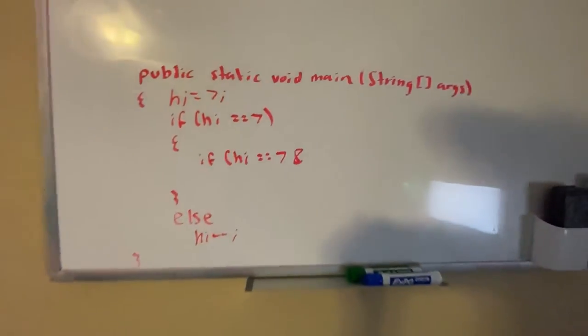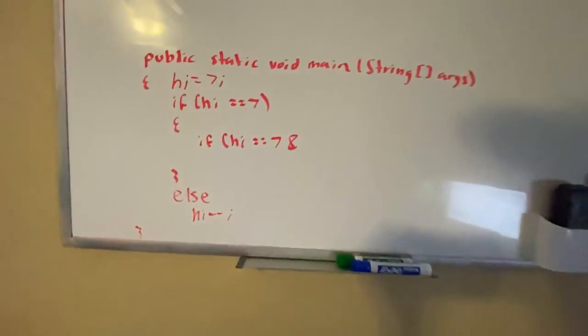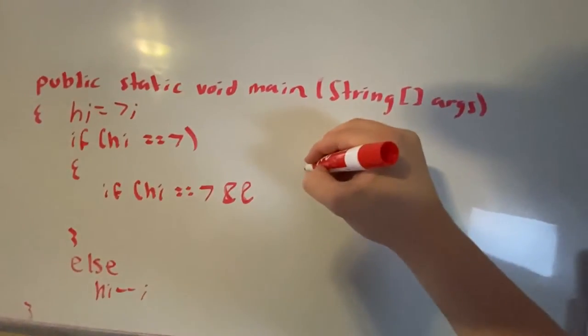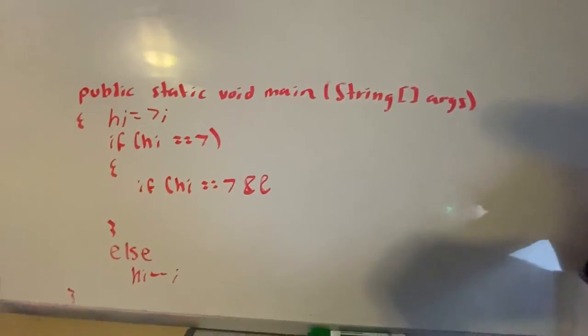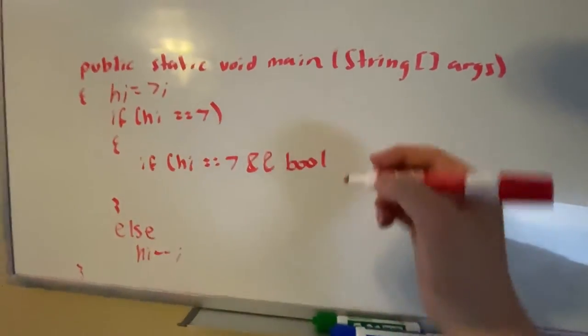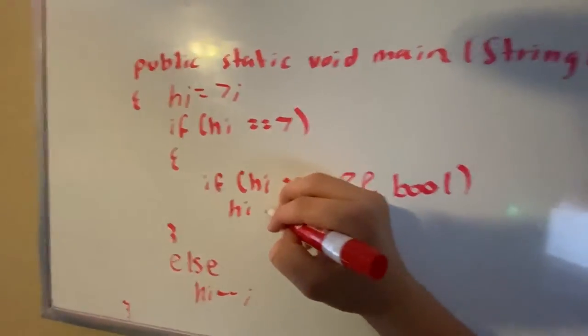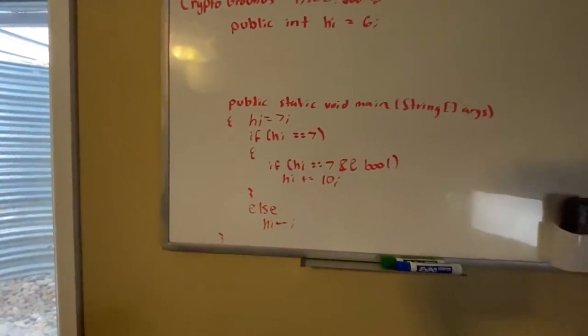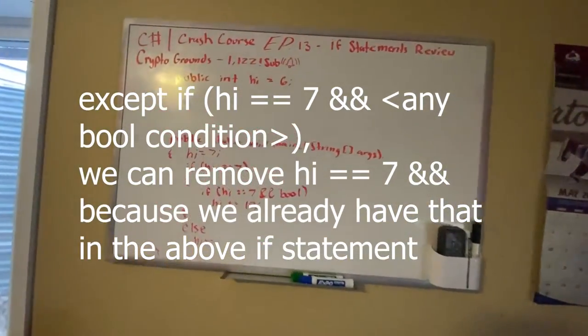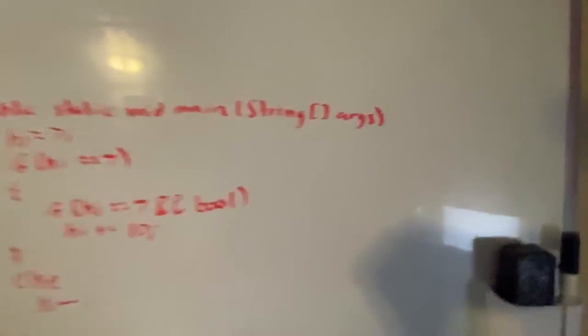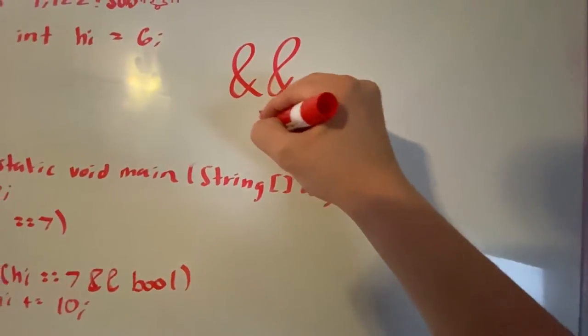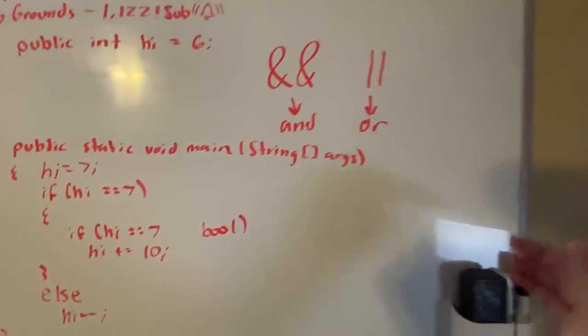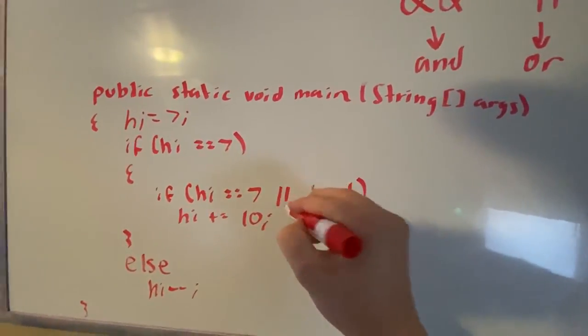Another thing I forgot to talk about in the operators video is the and and or. We have and, you obviously know what the and looks like. Let's say we have a separate bool, if that's true then we can just do i plus equals 10. This is the correct formatting. I should probably comment that. This is and, and the two bars is or. You can do and or you can also do that too.